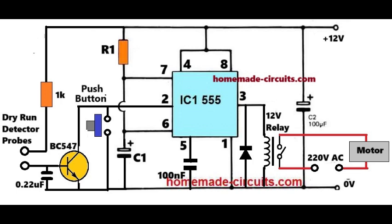In case water is detected, the pump motor starts drawing water and this water supply from the pump now bridges the dry run detection probes. Due to this, the BC547 transistor is switched on, which then grounds the pin number 2 of the IC, bypassing the timing components of the IC.